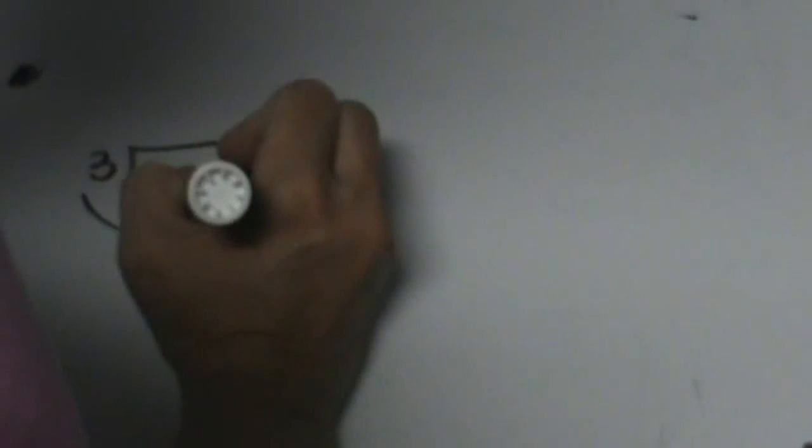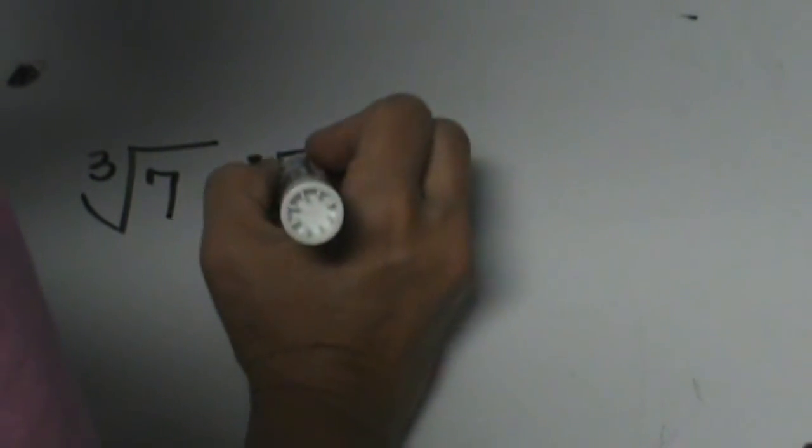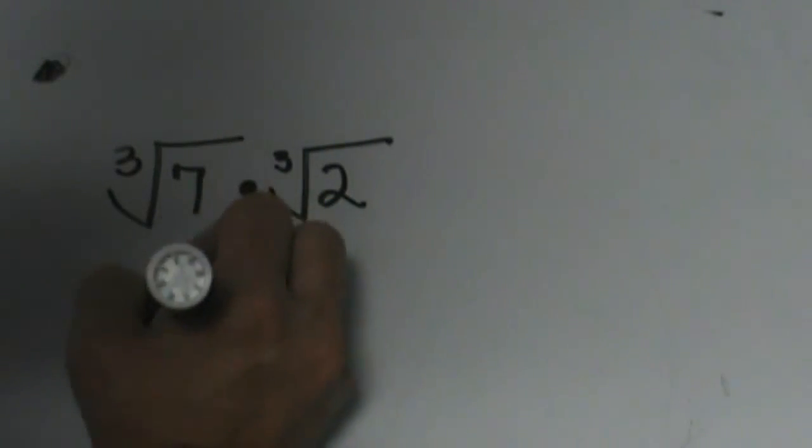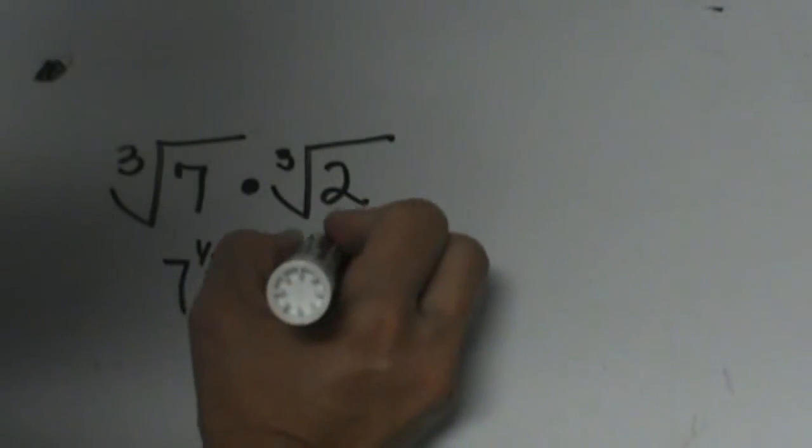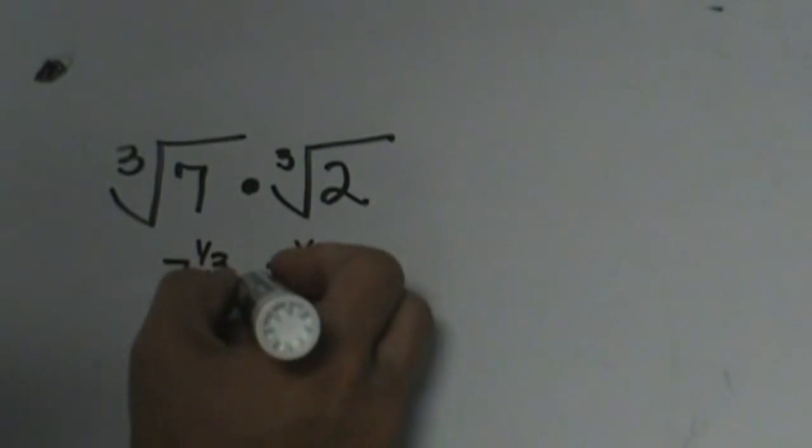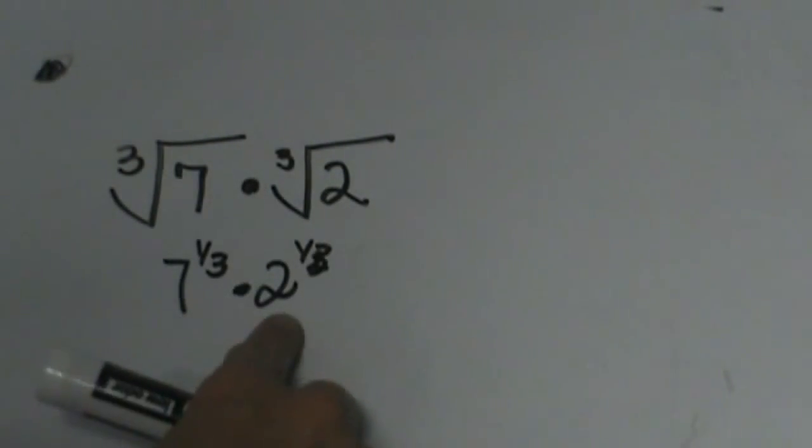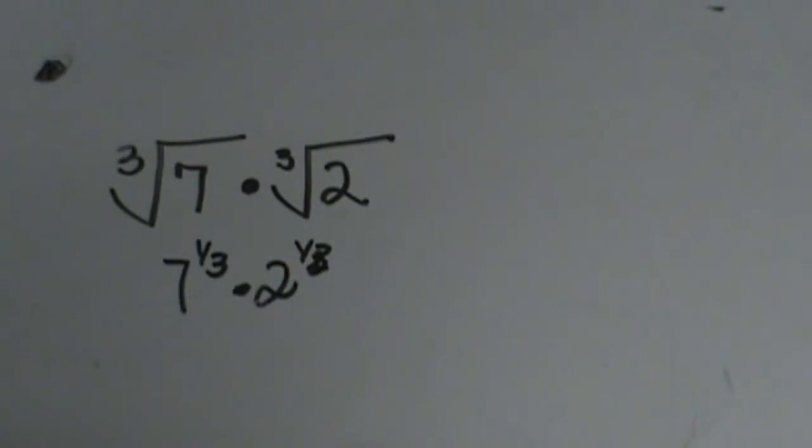The cube root of 7 times the cube root of 2. These cube roots also mean 7 to the 1/3 and 2 to the 1/3. We can't combine those because they have different bases, but we can put them together under a radical because they are both cube roots.